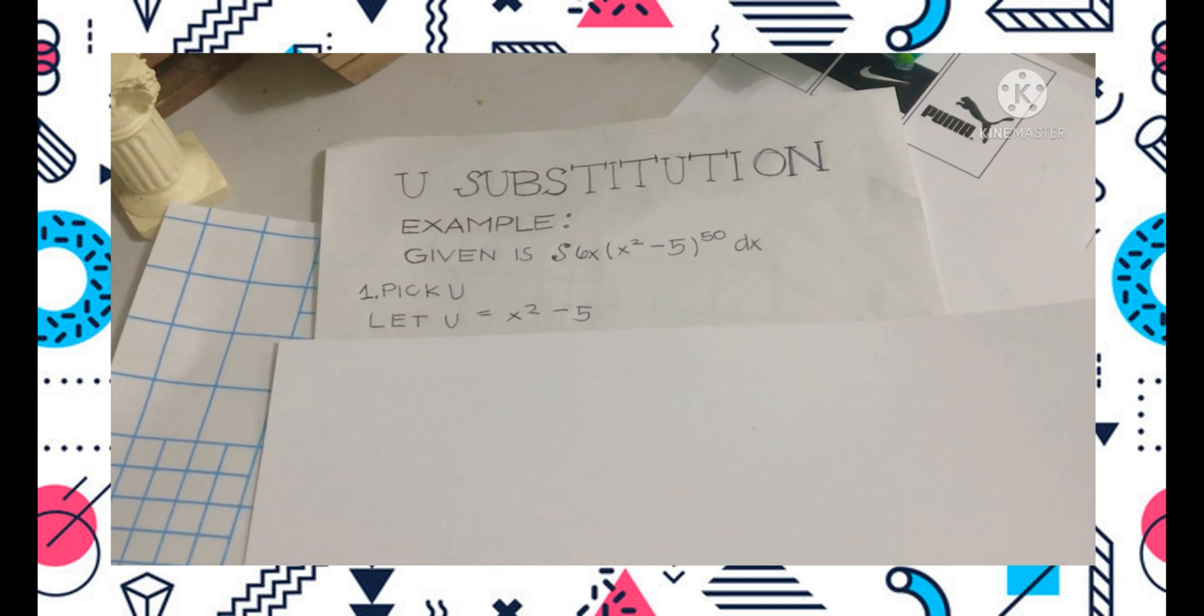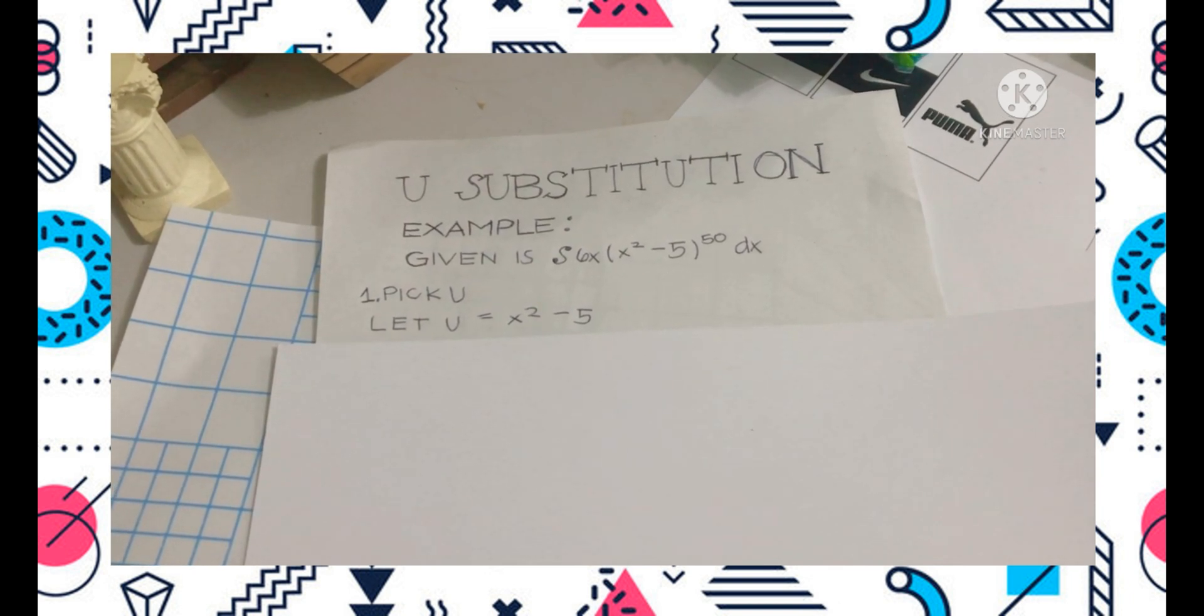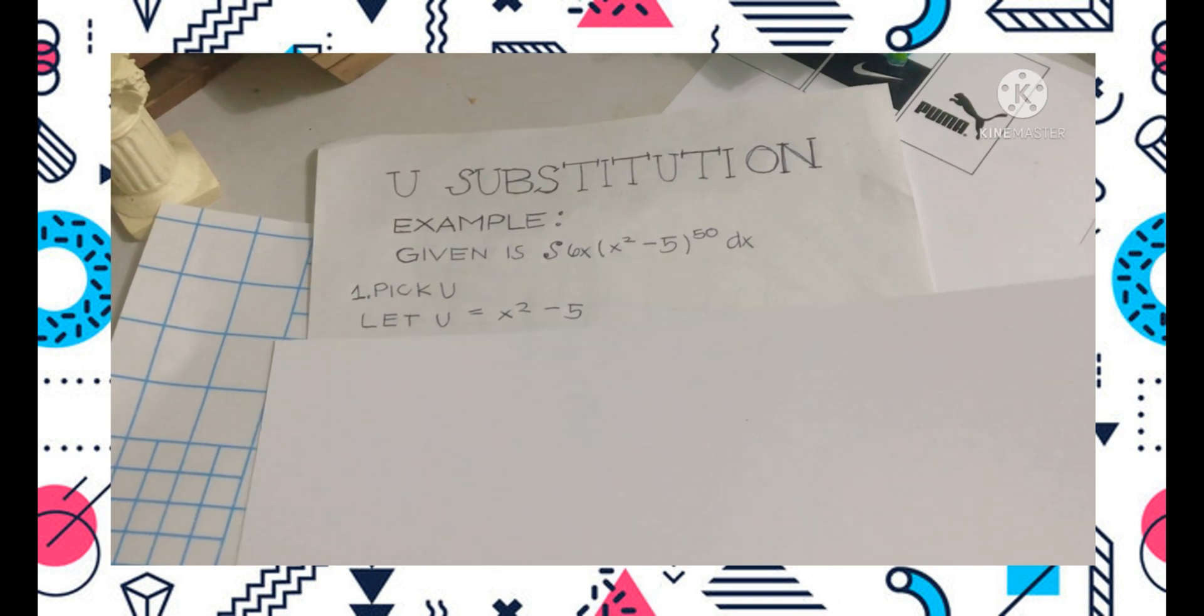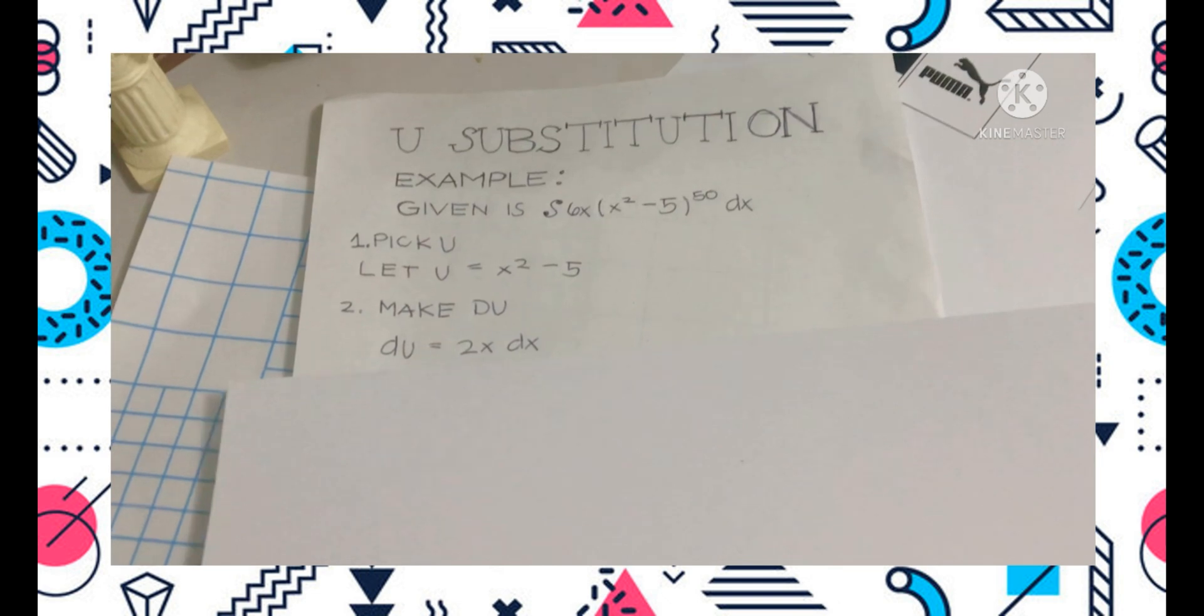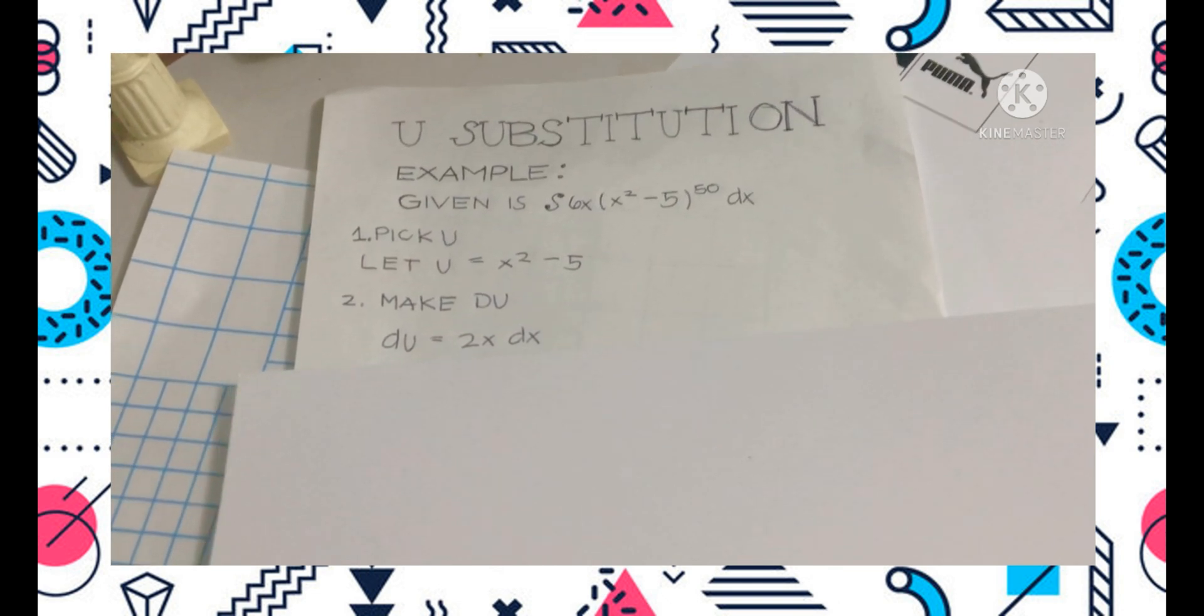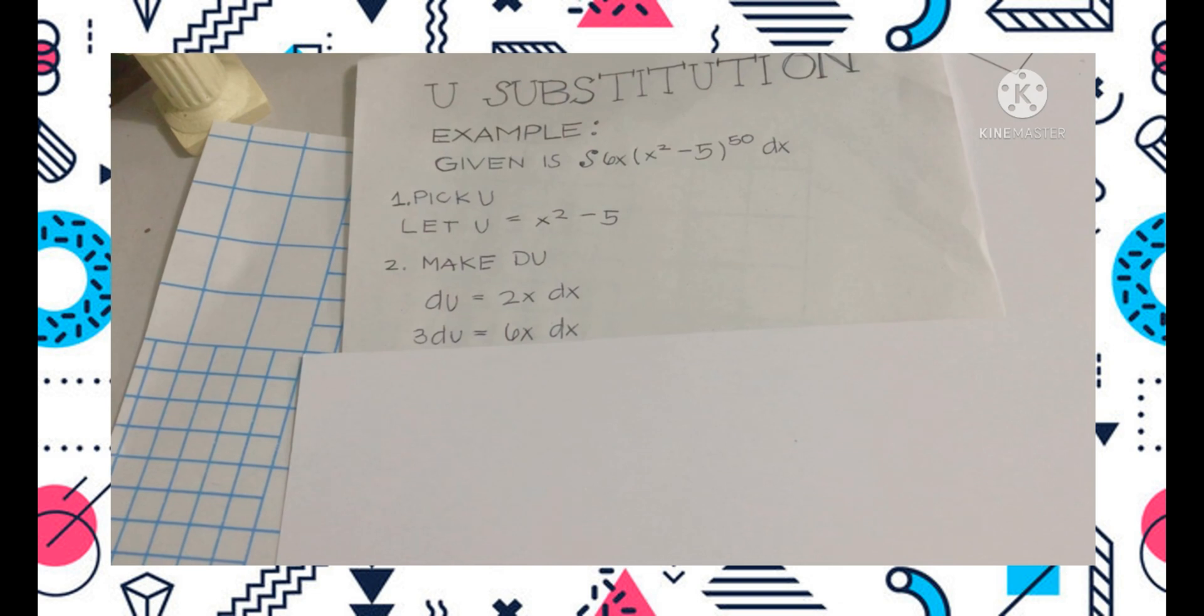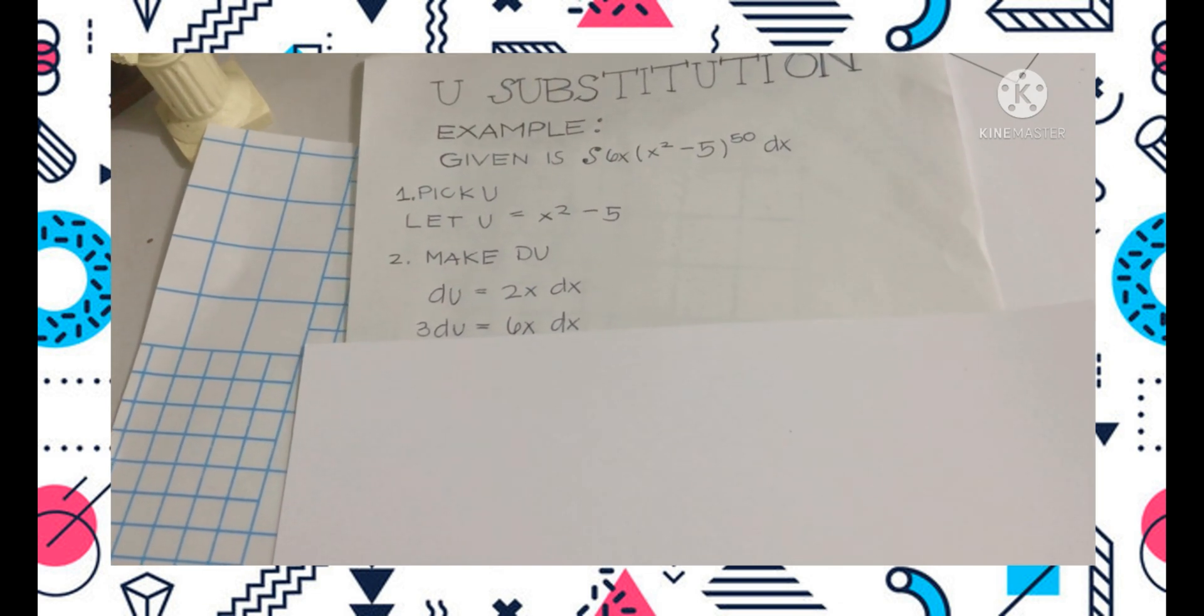If we get the derivative of x squared minus 5, it's going to be equal to the rest of the integral, which is 6x and dx. We multiply both sides by 3, it will give us a product of 6x dx. Now our du statements are the same with the given example.